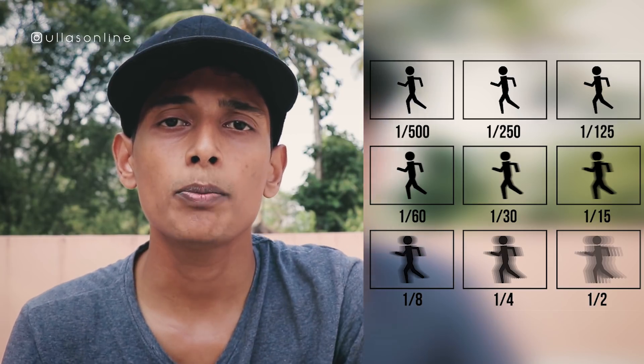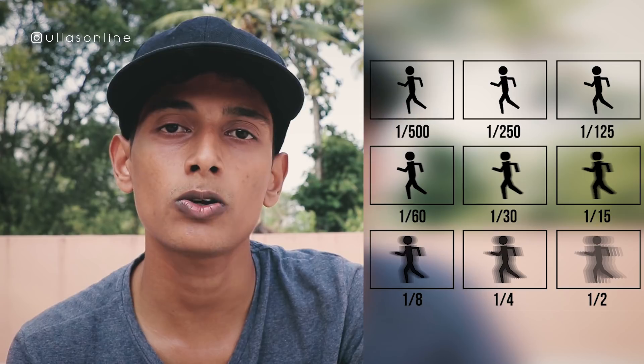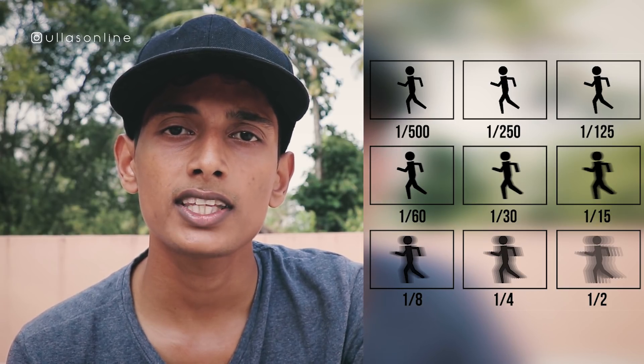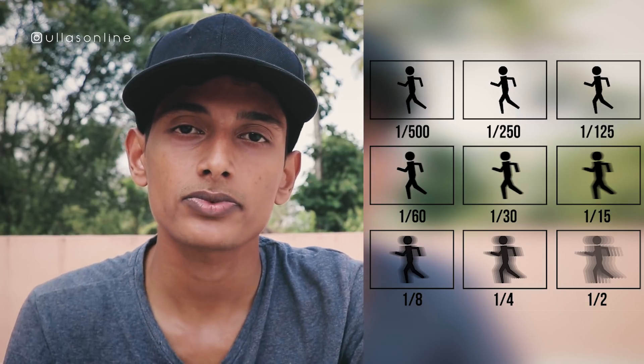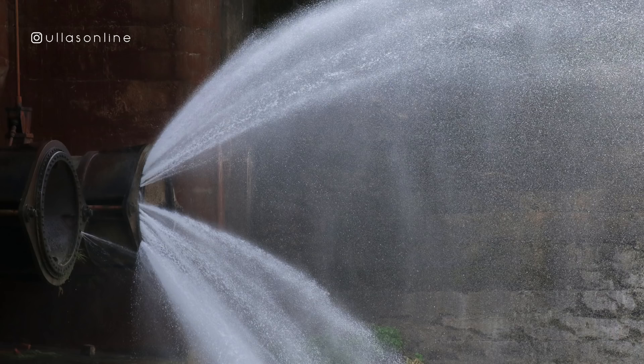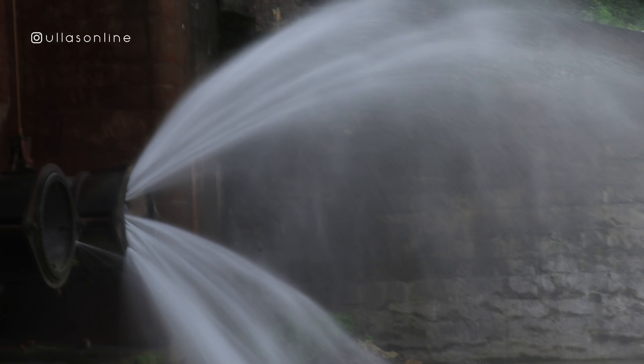This is the shutter speed. Motion blur is related to shutter speed. With a higher shutter speed — like 1/500 or 1/1000 — motion blur is reduced. This is an example of using a higher shutter speed. Before the motion blur disappears, the motion is captured by the shutter speed.